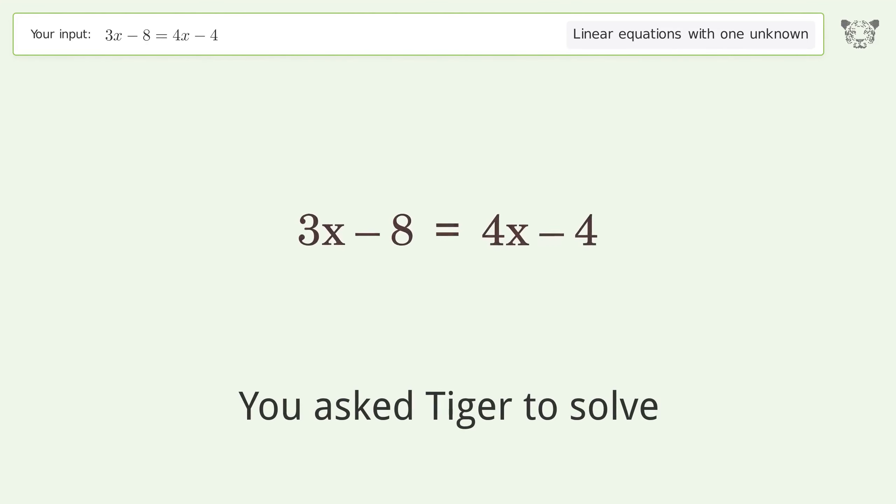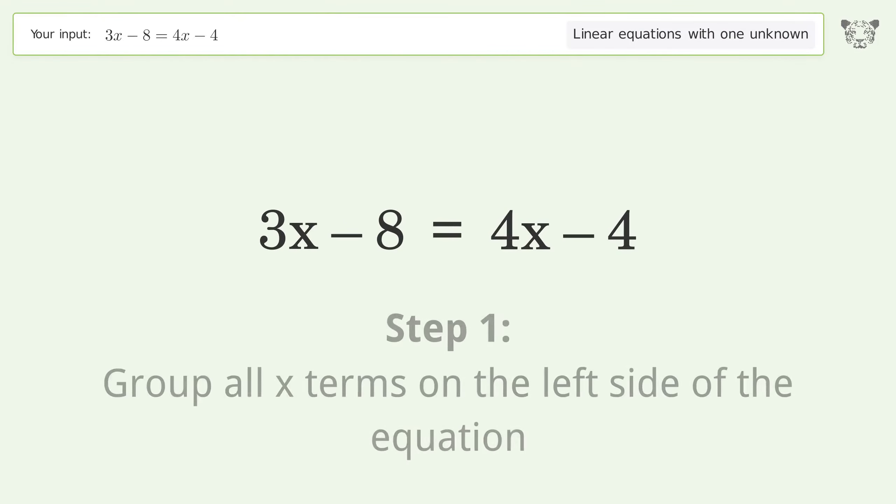You asked Tiger to solve this linear equation with one unknown. The final result is x equals negative 4. Let's solve it step by step. Group all x terms on the left side of the equation.